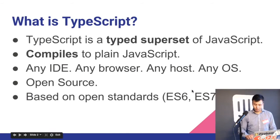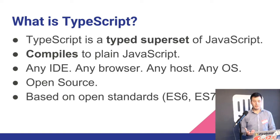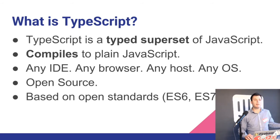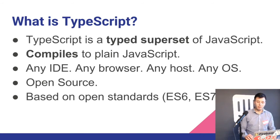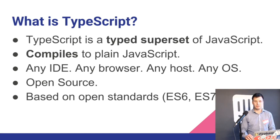TypeScript is a superset of JavaScript. Everything you know about JavaScript is valid in TypeScript, plus a few extra things. The main extra thing is types. In JavaScript we have dynamic typing — when you declare a variable you don't express what type it is. With TypeScript we do express the type. When you compile, it compiles to plain JavaScript and can run on any IDE, any browser, any operating system or hosting service. And it's open source — it's on GitHub.